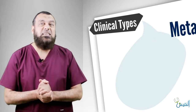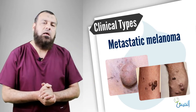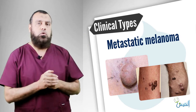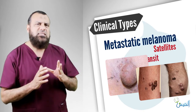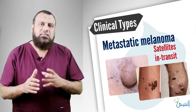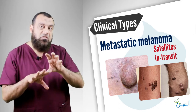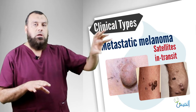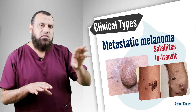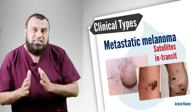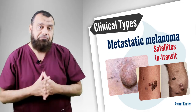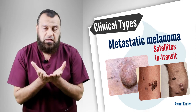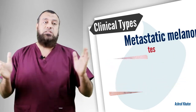The eighth and last type is metastatic melanoma — either as satellites around the nodule, or what we call in-transit metastasis, meaning seeding of malignant cells during the journey into the lymph nodes, producing deposits in the skin. So there are eight types in total.